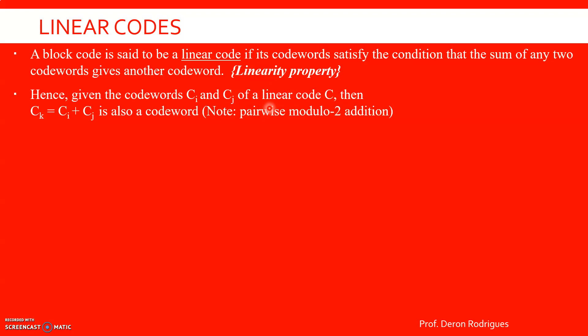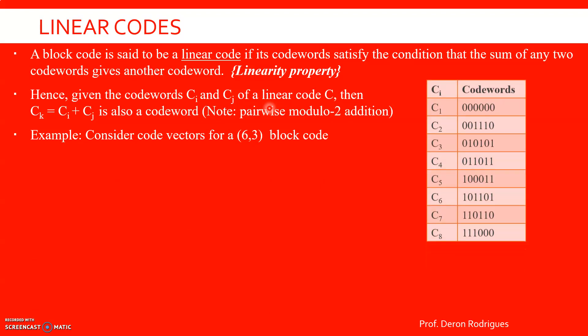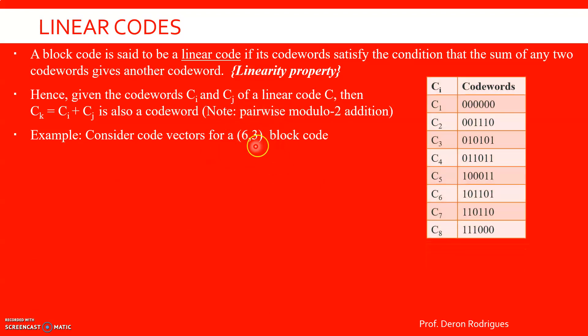Basically, we take any two code words and if the sum — that is Modulo-2 addition or in other words XOR operation — gives a result that is also a code word, then it is called a linear code. So let us take an example of a (6,3) block code. When I say (6,3), n is equal to 6 and k is equal to 3. k equal to 3 means there are 3 message bits, and hence we have 8 possible combinations of the message bits, or 8 data words, and hence we have 8 code words. Each of these code words is of 6 bits because n is equal to 6.